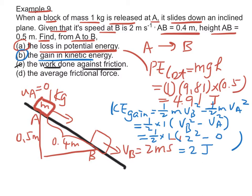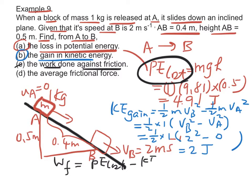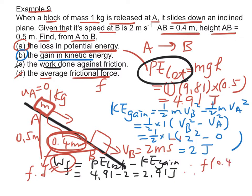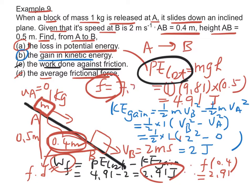Part C: find the work done against friction. The work done against friction is equal to the PE loss minus the KE gain, which is equal to 4.91 minus 2, equal to 2.91 joules. Part D: find the average frictional force. Since work done against friction equals Fd and d equals 0.4 m, we have F times 0.4 equals 2.91. Therefore, the average frictional force is equal to 7.28 N.